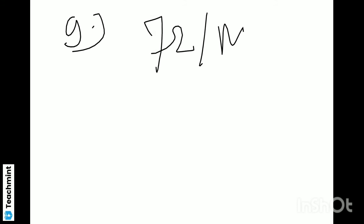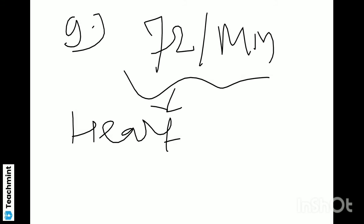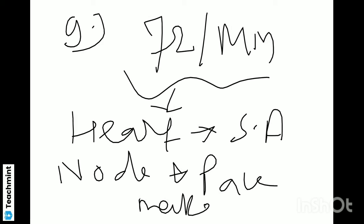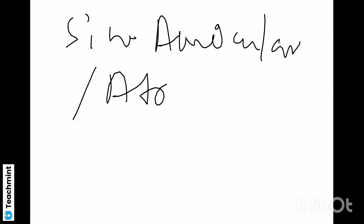Question number nine: The normal heart rate is 72 per minute, maintained by — heart ka ek aur bhi naam hota hai. This is also known as the SA node, and also called pacemaker. Isko SA node bhi bolte hain aur pacemaker bhi kaha jaata hai. SA node ka full form bhi remember karo.